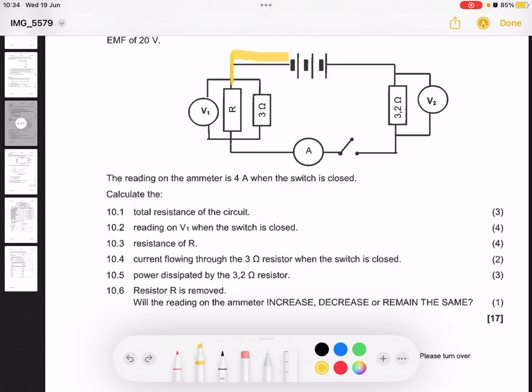Now, we have here resistor R and the 3 ohm resistor, both in parallel. Parallel resistors have the same voltage as per your notes or as per how they are arranged. They have the same voltage, but they have a different current if they have a different resistance. We don't know what resistor R is.